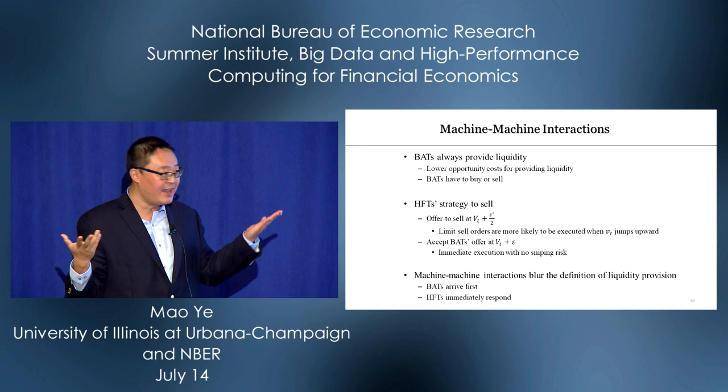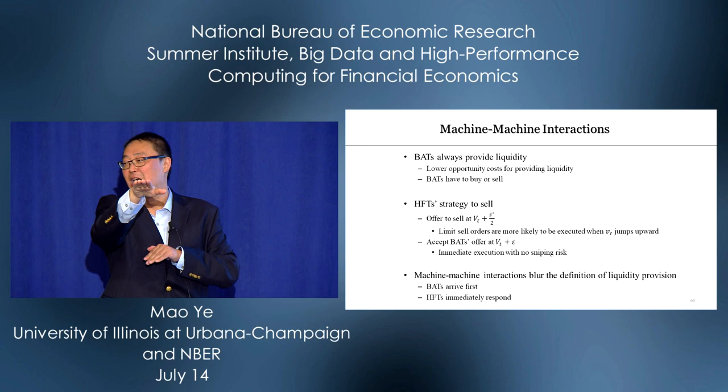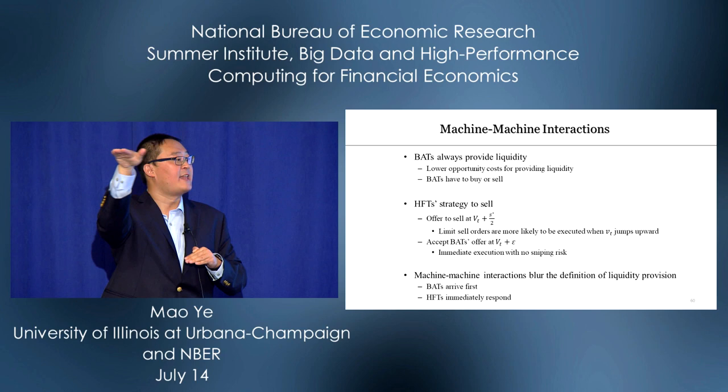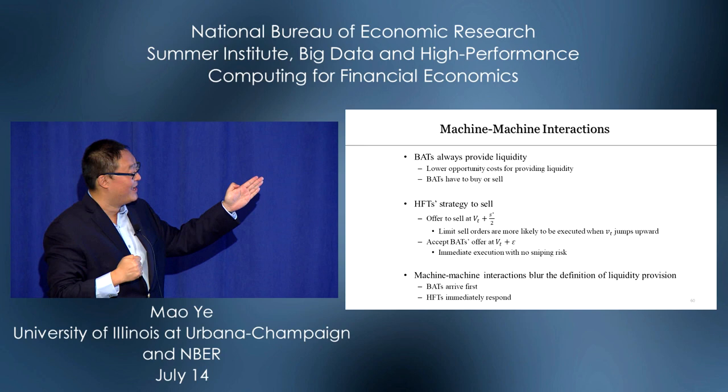What's the HFT strategy? HFT has two prices: the price they offer (listing a bid/ask, subject to sniping risk) and the price they accept. If you sell, you want to sell at a higher price, but you must accept the lower BAT price. Machine and machine interaction are fascinating because they blur lots of traditional definitions. In limit order book literature, the first arrival is traditionally the liquidity provider — but BAT's limit order generates an immediate response from HFTs. So who provides liquidity becomes an open question.